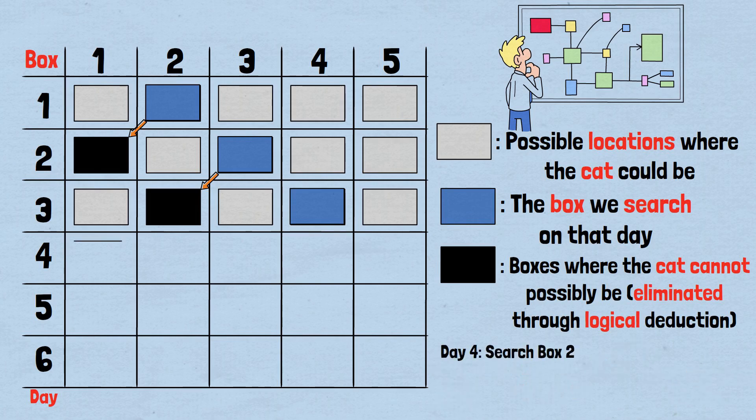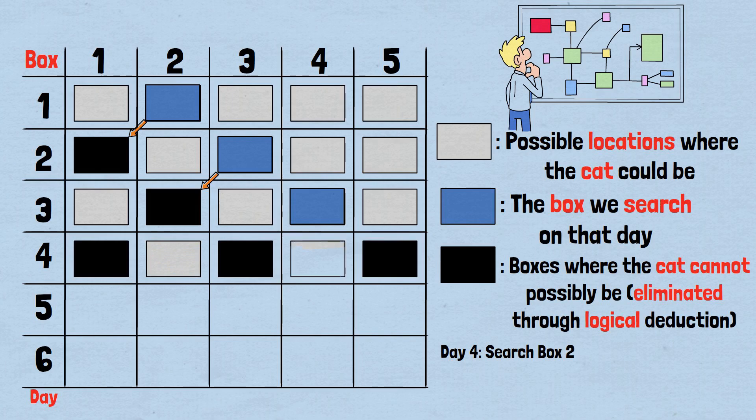Day 4: Search box 2. The reset. Grid status: We can eliminate boxes 1, 3, and 5, mark them black, because we know the cat must now be in an even position. Only boxes 2 and 4 remain gray. Our search: We check box 2, blue. Result: If we find the cat, we win. If not, we know with absolute certainty the cat is in box 4.